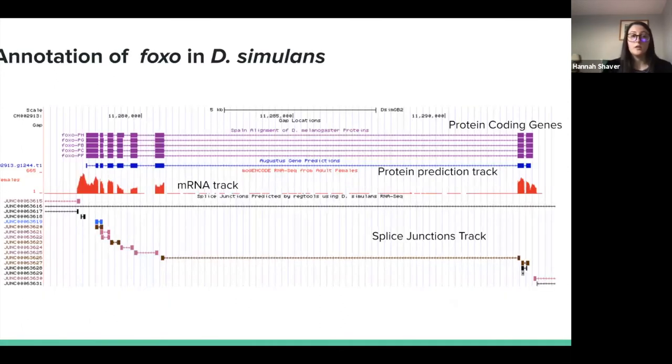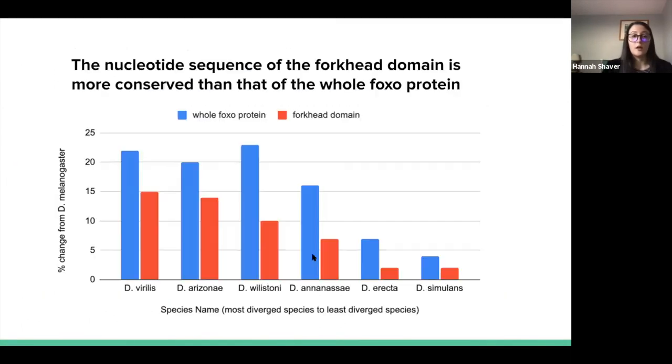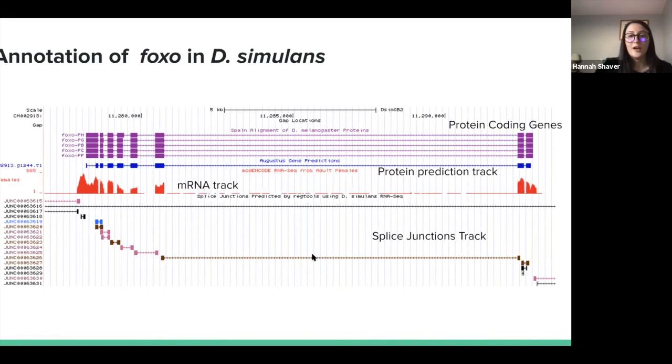Here's a screenshot of FOXO from the genome browser that was previously mentioned. There are a few annotation tracks labeled: the purple one is the prediction for protein coding genes, blue is the protein prediction track, red is mRNA that helps us determine where the gene is being expressed, and at the bottom we have the splice junctions track that helps us locate where introns and exons are splicing.